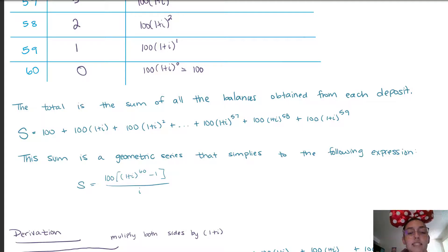Okay, now this sum is a geometric series and it simplifies to the following expression of 100 times the quantity 1 plus I to the 60 minus 1. And this portion right here, this is what looks like our effective rate formula, so again kind of predicting, and we're dividing this entire quantity by I, our rate per compounding period.